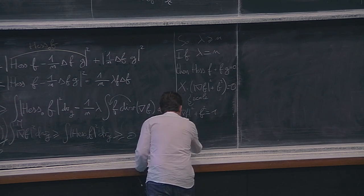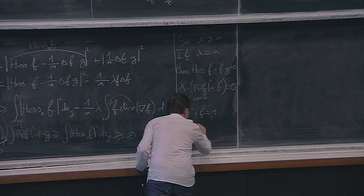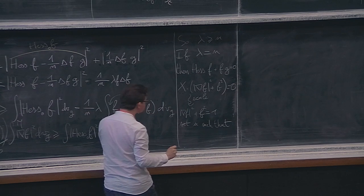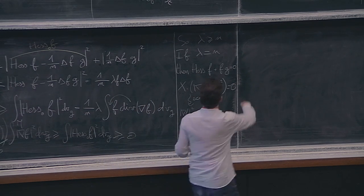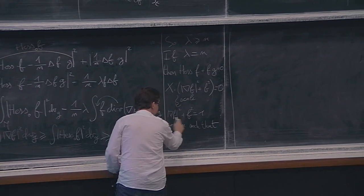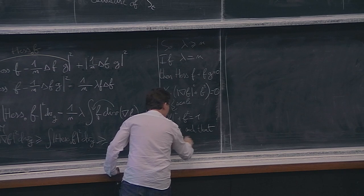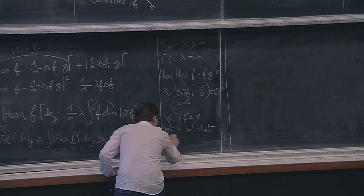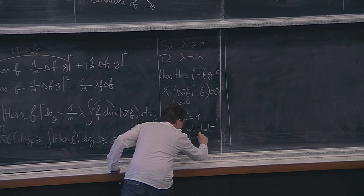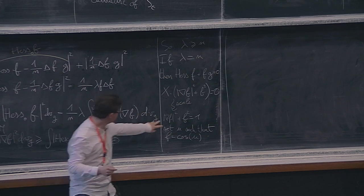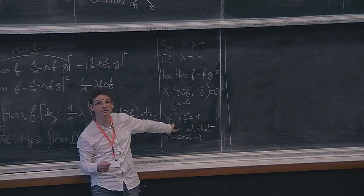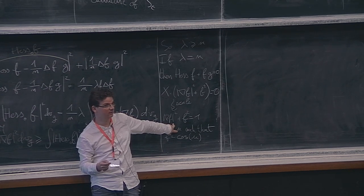Setting f = cos(u) — and this comes from inspecting what happens on the sphere — we note that the maximum of f must be 1 and the minimum must be −1. The function u will serve as a distance function.